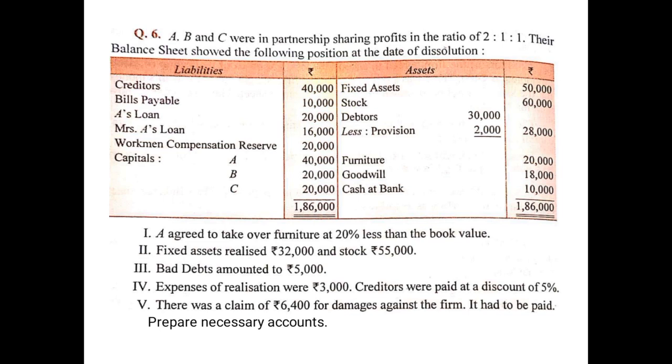Bills payable is also an outside liability, so it will also be transferred on the credit side of the realization account — by bills payable, 10,000.